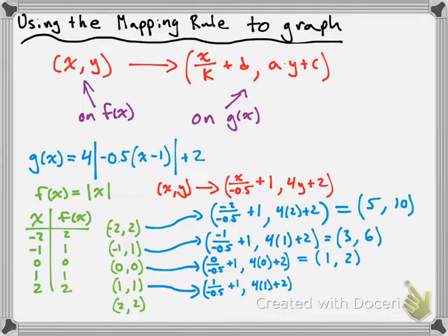For the point (1, 1): x becomes 1 divided by negative 0.5 plus 1, and y becomes 4 times 1 plus 2. 1 divided by negative 0.5 is negative 2, plus 1 is negative 1. 4 times 1 is 4, plus 2 is 6. So I have the point (−1, 6) on my transformed function.